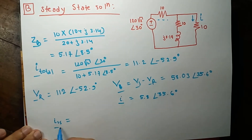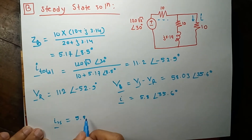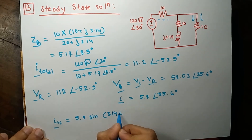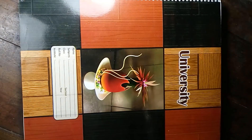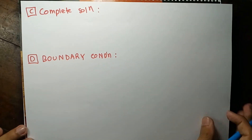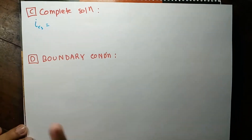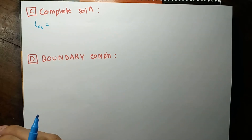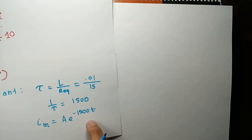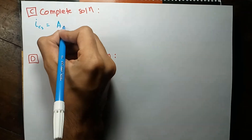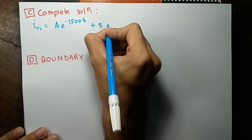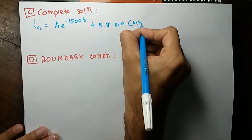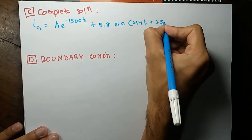So the steady-state solution in the time domain will be 5.8 sin(314t + 35.6°). Now the complete solution is the summation of the transient solution plus the steady-state solution. The transient solution was A e to the power negative 1500 t, plus the steady-state solution 5.8 sin(314t + 35.6°).